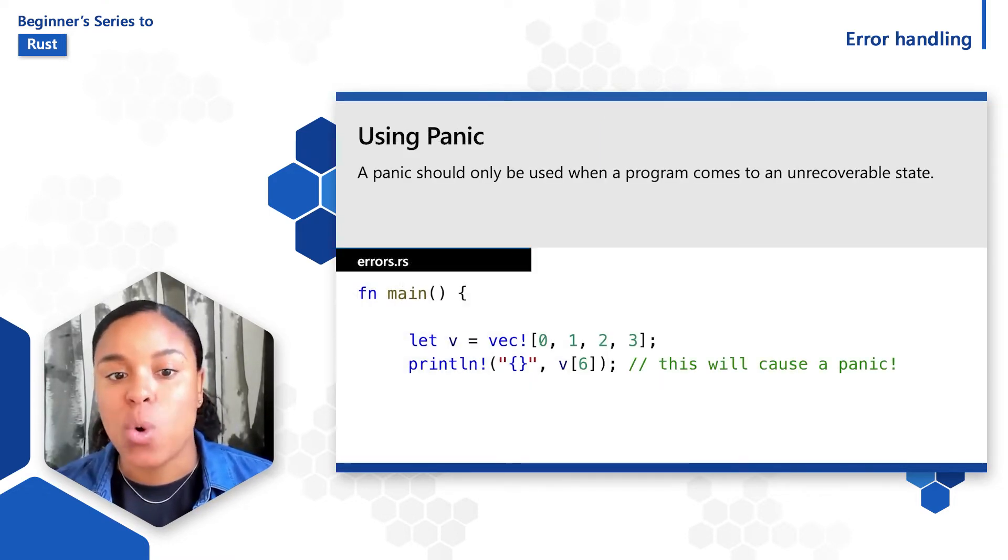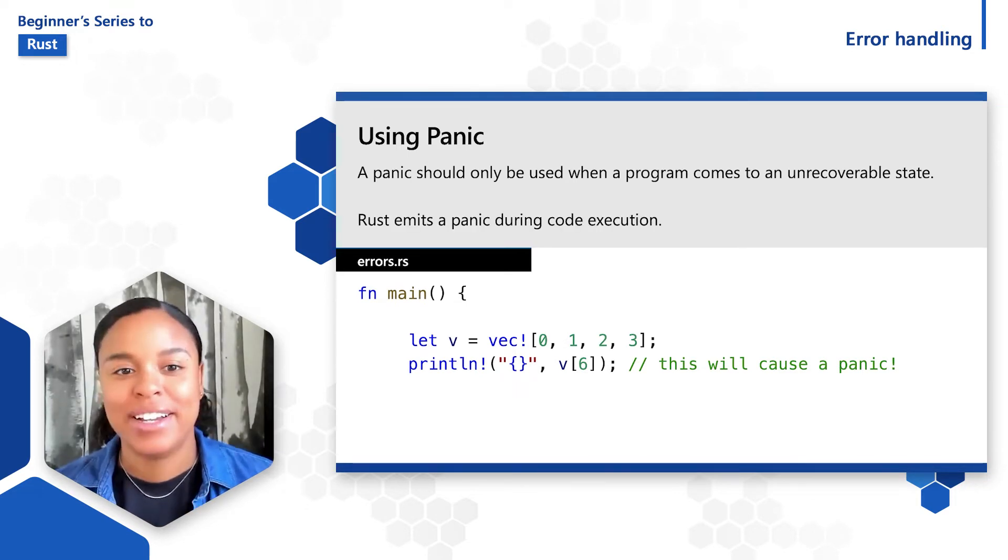Generally, a panic macro should only be used when a program comes to an unrecoverable state. Rust can also emit a panic on some operations such as division by zero or an attempt to access an index that isn't in an array, a vector, or a hash map.